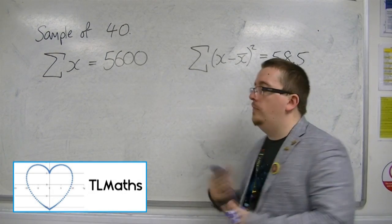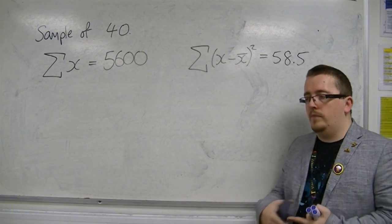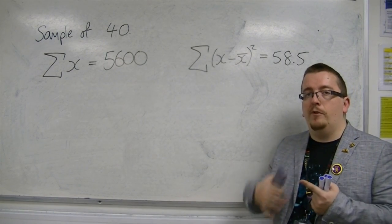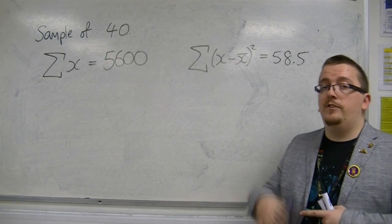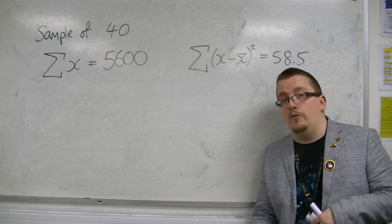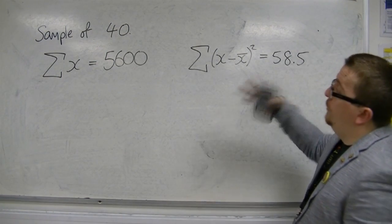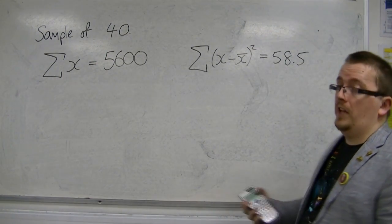You could be given the information to find an estimate for both the mean and an unbiased estimator for the variance using sigma notation, like so.